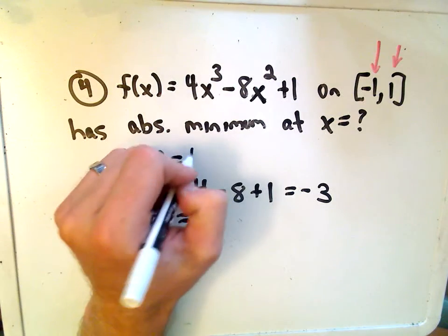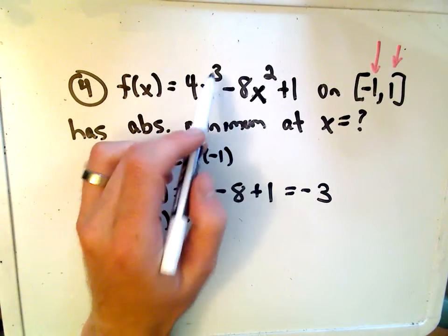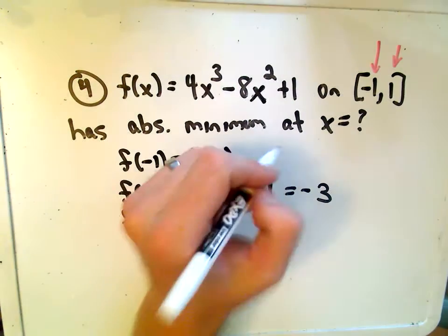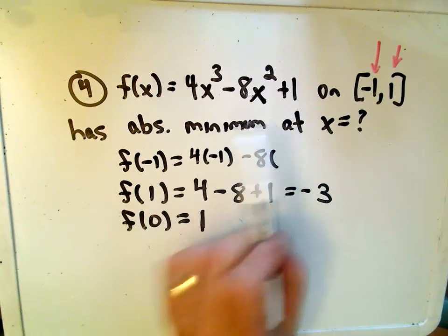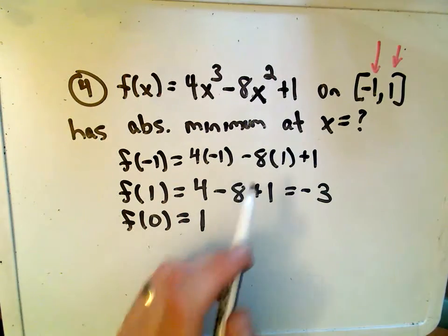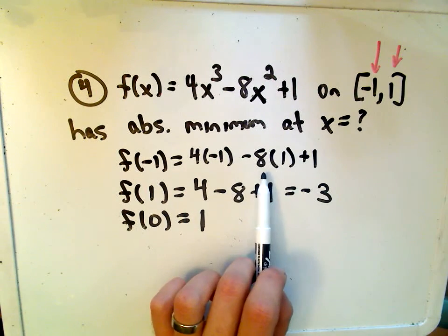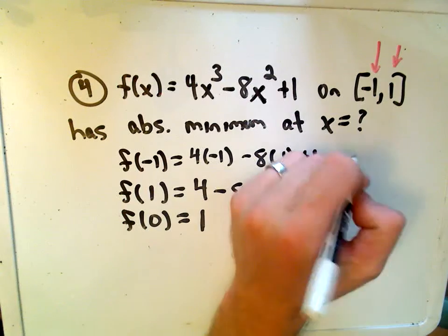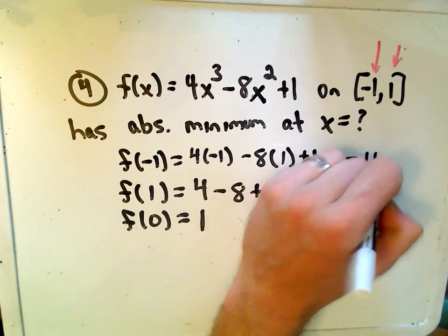If we plug in negative 1, we'll get 4 times negative 1 cubed, which will give us negative 4, minus 8 times, okay, negative 1 squared is still positive 1, plus 1. So it looks like we get negative 4 minus 8, which is negative 12, plus 1 is negative 11.